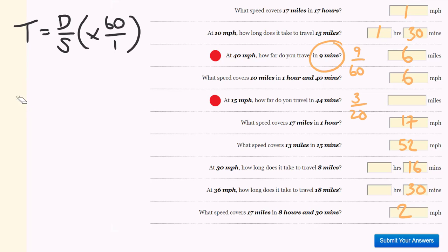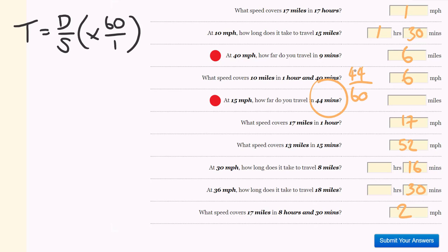Lucky last question of this first set: at 15 miles per hour, how far do you travel in 44 minutes? Turn this into a fraction: 44 out of 60. 4 goes into both — 4 goes into 44 eleven times and into 60 fifteen times. We have 11 out of 15, which equals the distance over the speed of 15. From 15 to 15 we times by 1, so 11 times 1 — our final answer is 11 miles. I'll go through the next lot of questions just to make sure we're all good.